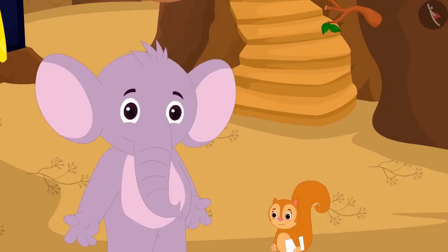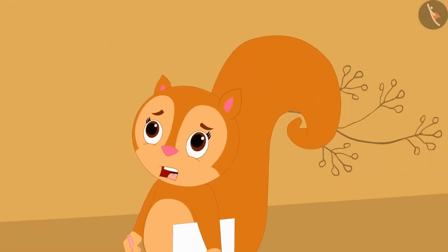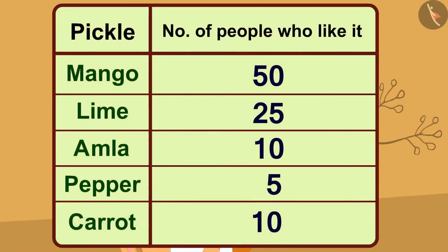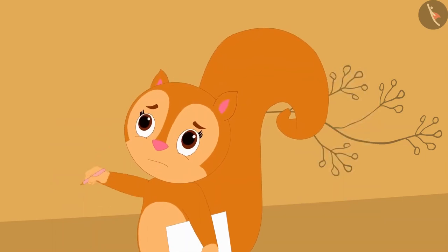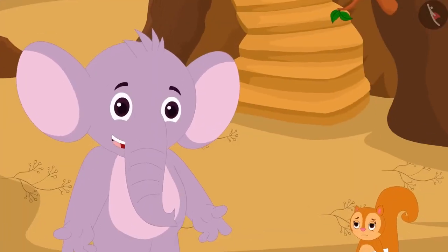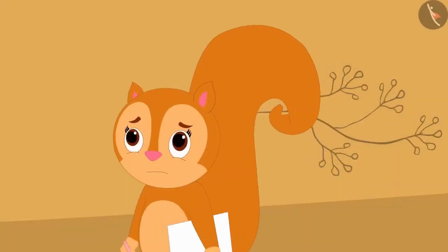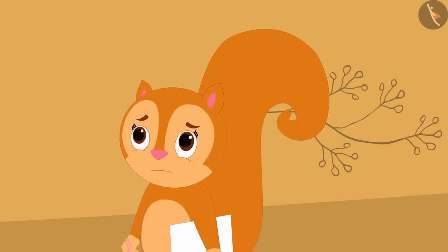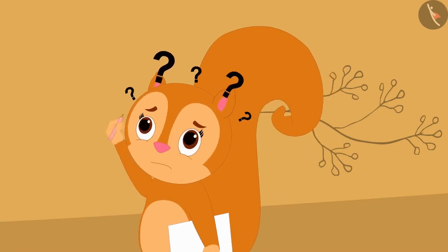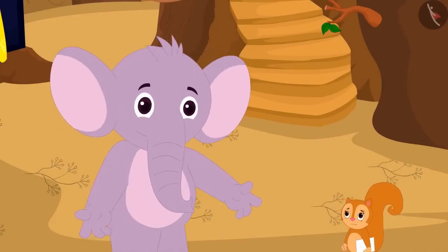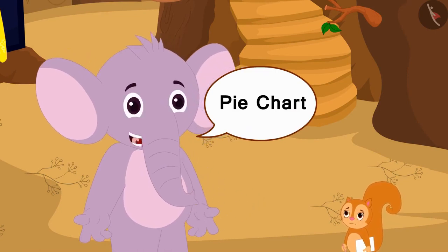They returned to Chanda's house. Appu, I am tired of wandering around the village all day long. And now I don't understand anything after seeing so many numbers. Is there any way that we can understand all this information at one glance? Yes, Chanda. We can illustrate this information using a pie chart. Hey Appu, I am already feeling very hungry, and now you are increasing my appetite by taking the name of this pie chart. What is this pie chart? Through the pie chart, we can illustrate the information in a simple way by making a circle.